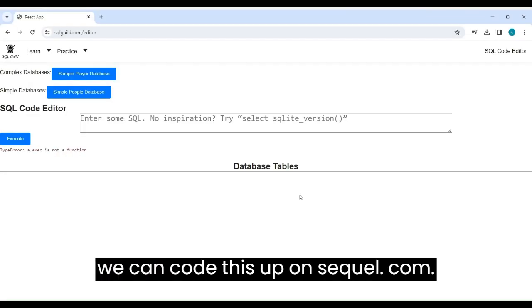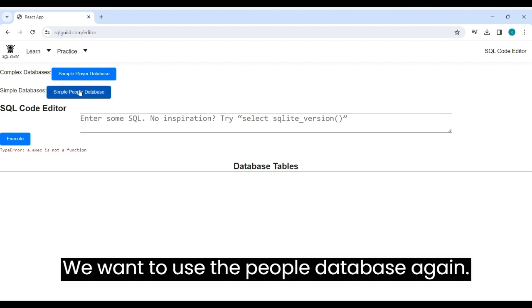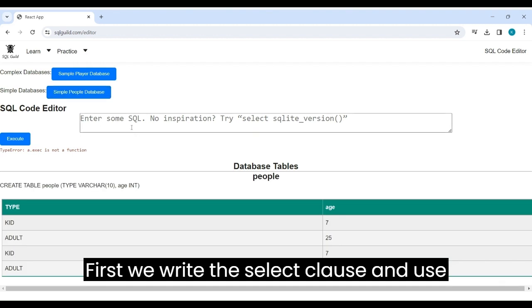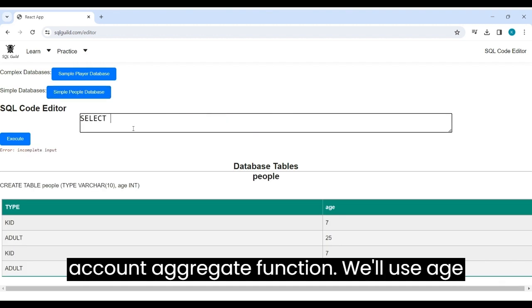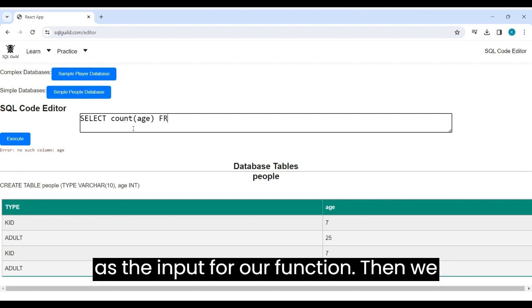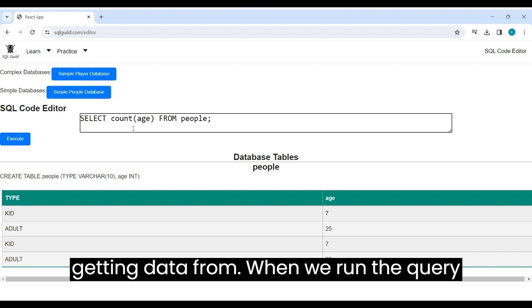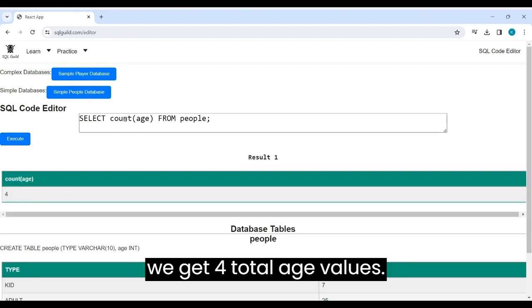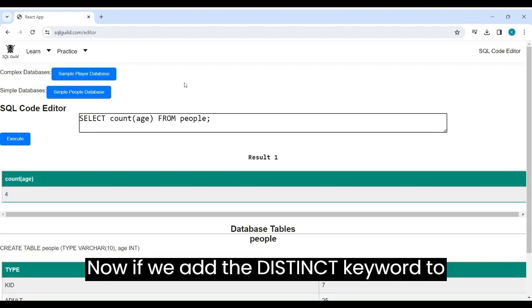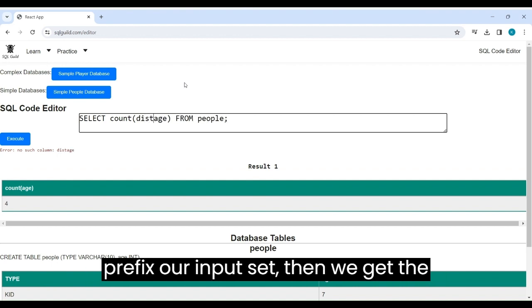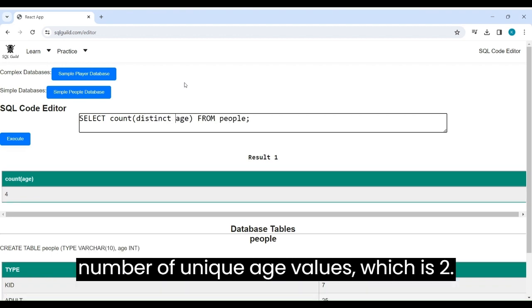Okay, now we can code this up on sqlguild.com. We want to use the people database again. First, we write the select clause and use a count aggregate function. We'll use age as the input for our function. Then we specify people as our table we are getting data from. When we run the query, we get 4 total age values. Now, if we add the distinct keyword to prefix our input set, then we get the number of unique age values, which is 2.